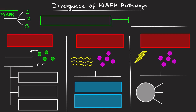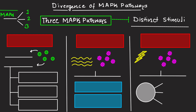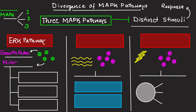Now let's discuss the divergence of MAP kinase pathways — the different types that exist. Three primary MAP kinase pathways are each activated by distinct stimuli and mediate specific cellular responses. The first is the ERK pathway, which stands for Extracellular Signal-Regulated Kinases. The ERK pathway is activated by growth factors and mitogens, and it promotes cell progression, differentiation, and survival.